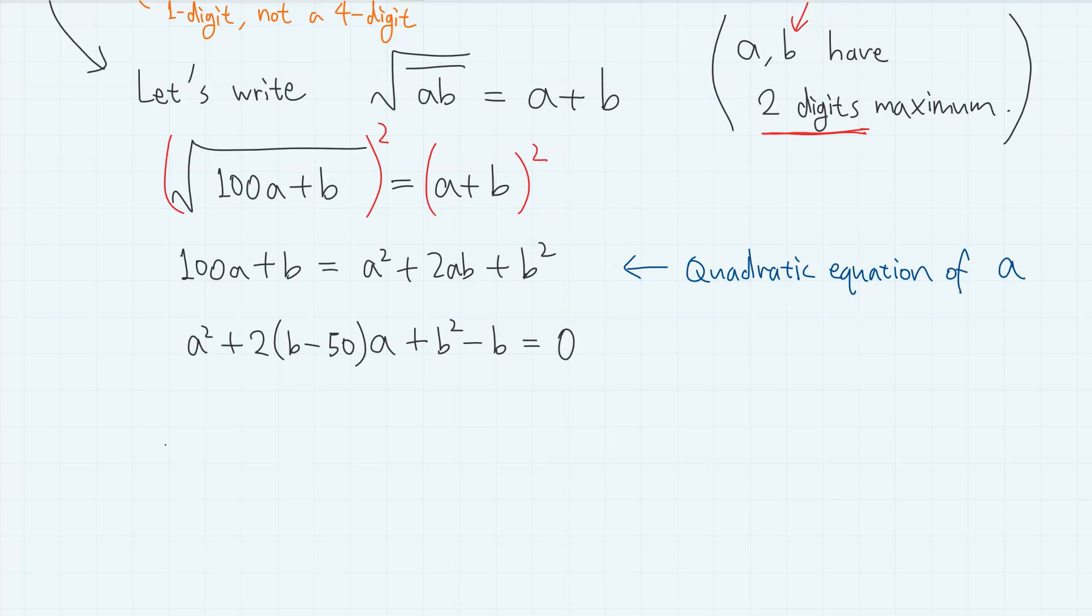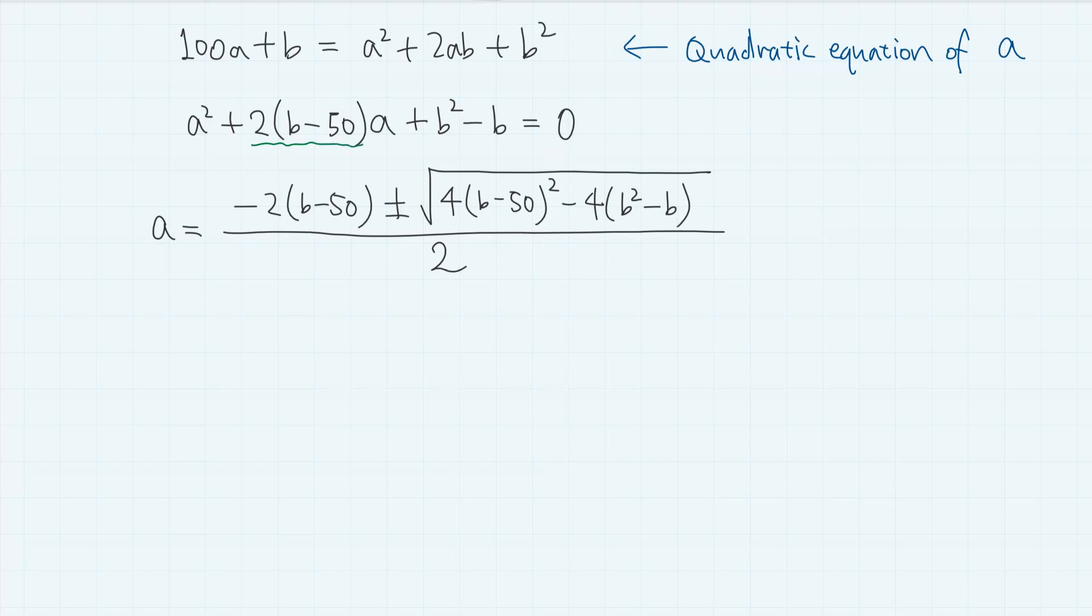If we use the quadratic formula, then we have a equals minus 2(b minus 50) plus minus square root of 4(b minus 50) squared minus 4(b squared minus b) divided by 2. By the way, the reason why I wrote this as 2 times (b minus 50) is because when the coefficient of the linear term is even, the quadratic formula becomes simpler. We can guarantee that 2 in the denominator gets cancelled out. So in the numerator, we cancel out this 2, and inside the square root we have (b minus 50) squared minus (b squared minus b).